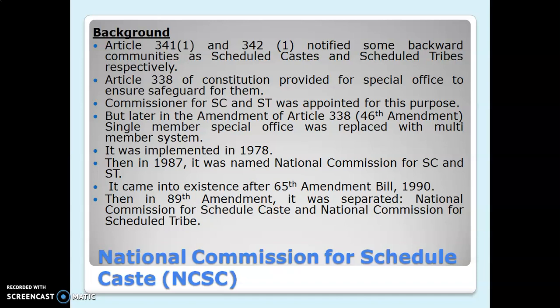Later, the 46th amendment to Article 338 replaced the single-member special office with a multi-member system. This was implemented in 1978, and in 1987 it was named the National Commission for SC and ST. Then after the 65th amendment in 1990 it came into existence formally, and in the 89th amendment the two groups were separated — one commission for SC and another for ST.